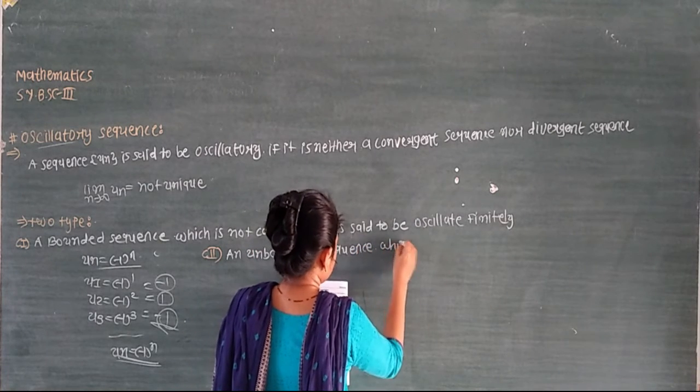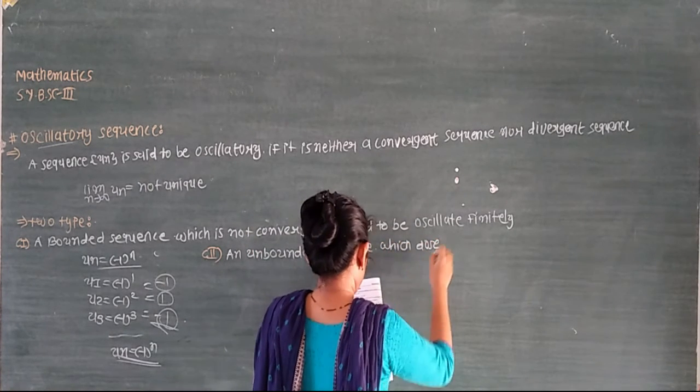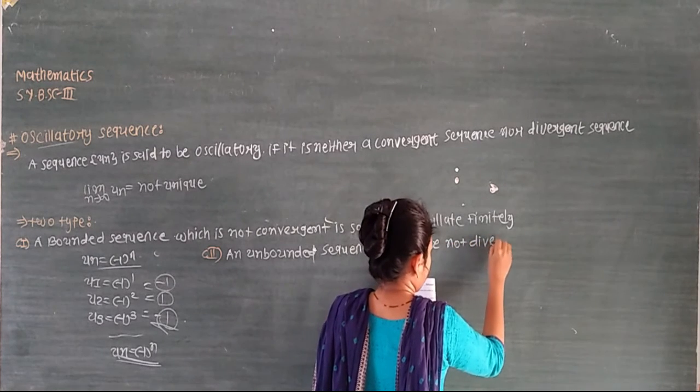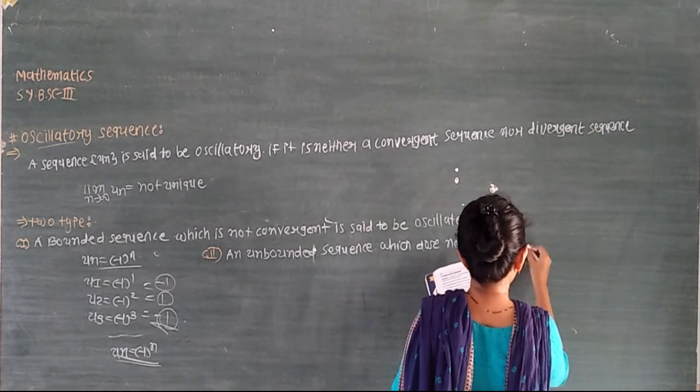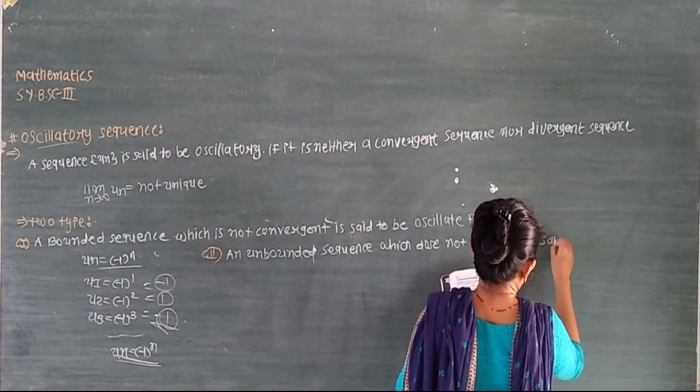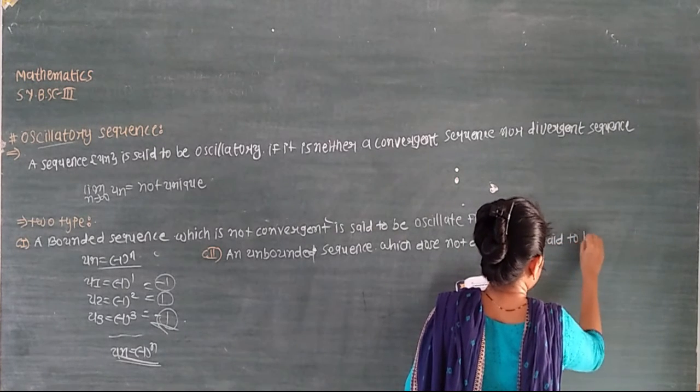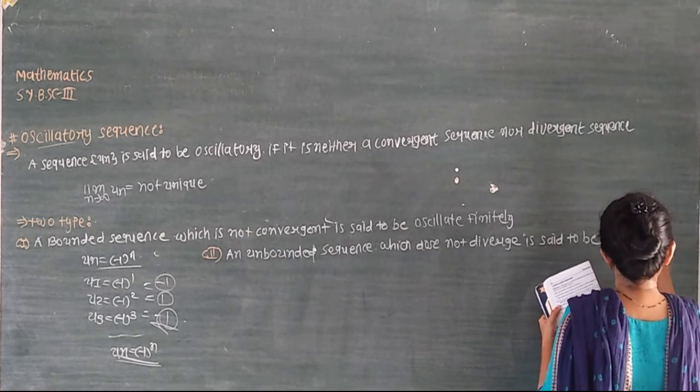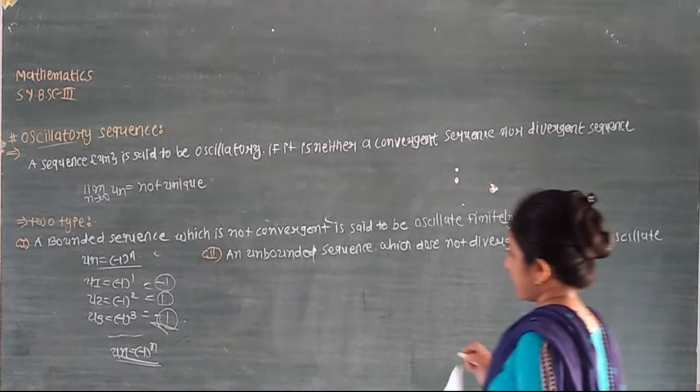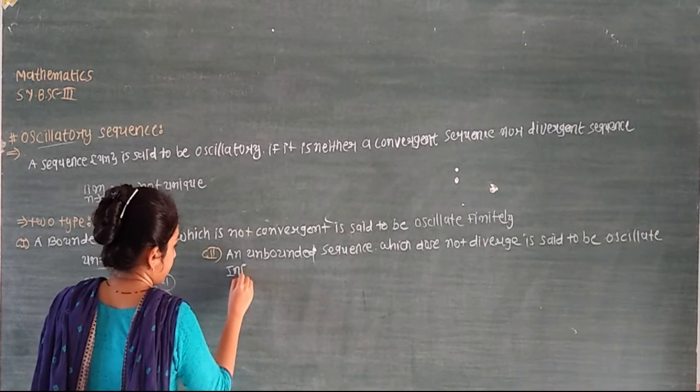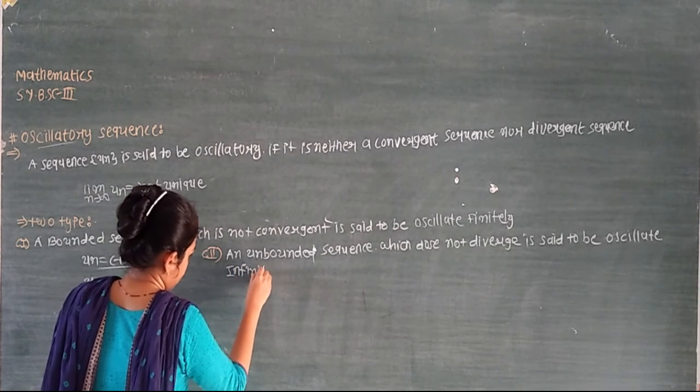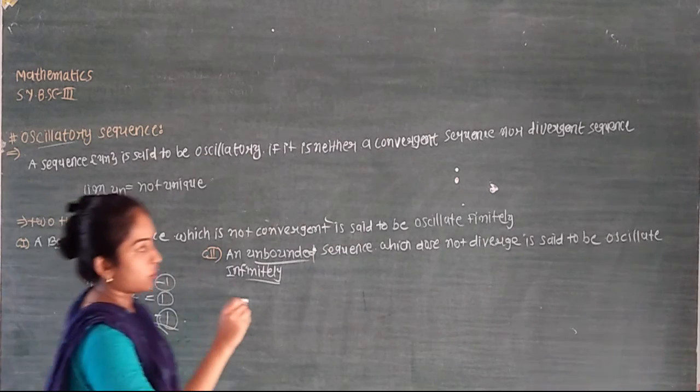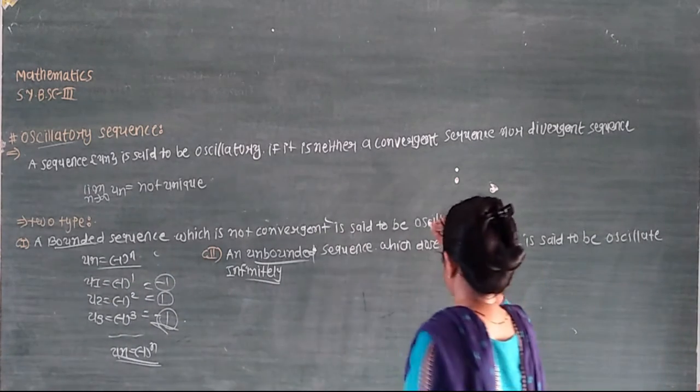A sequence which does not converge is said to be divergent. So we are bounded and unbounded. We have bounded infinity and bounded through both. We are bounded through sequences.